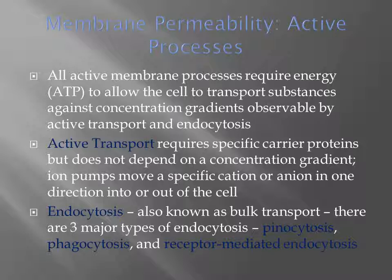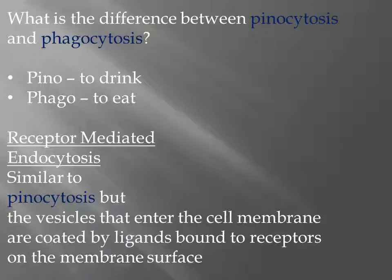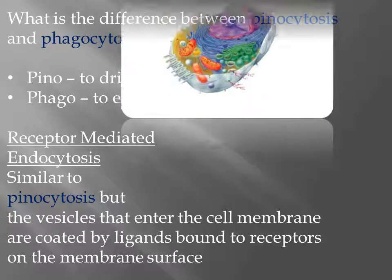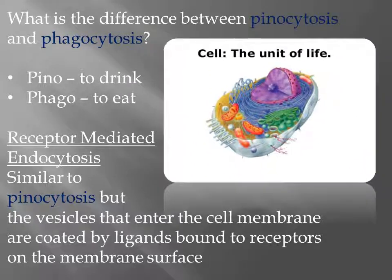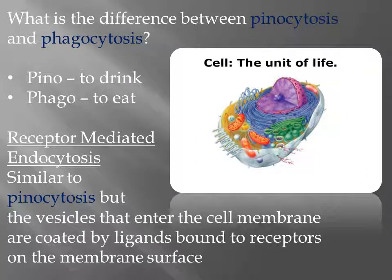Endocytosis, also known as bulk transport, involves three major types: pinocytosis, phagocytosis, and receptor-mediated endocytosis. The difference between pinocytosis and phagocytosis is that 'pino' means to drink and 'phageo' means to eat. Receptor-mediated endocytosis is similar to pinocytosis, but the vesicles that enter the cell membrane are coated by ligands bound to receptors on the membrane surface.